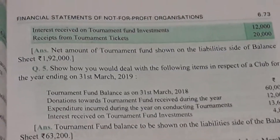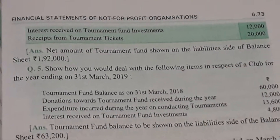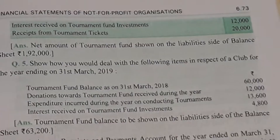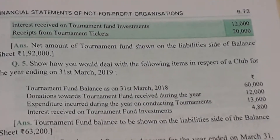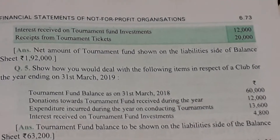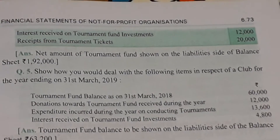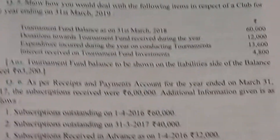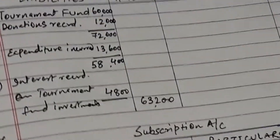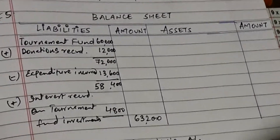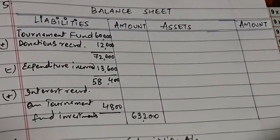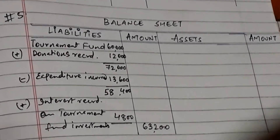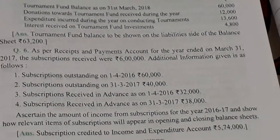Now question number 5: Tournament fund balance as on 31st March 2018 is 60,000. Donations towards tournament fund received during the year is 12,000. Expenditure incurred during the year on conducting tournaments is 13,600. Interest received on tournament fund investment is 4,800. Tournament fund is recorded on the liability side. Donations received and interest received are added, expenditure incurred is deducted, and the net amount is shown in the outer column of the balance sheet.